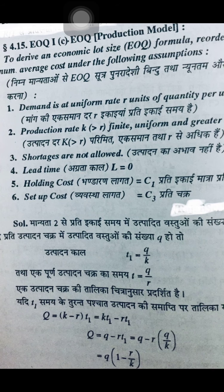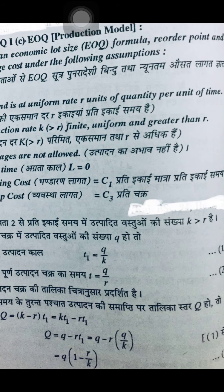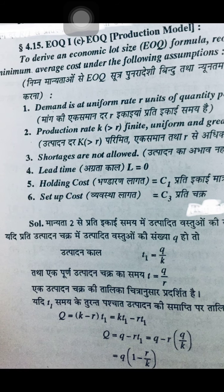Assumption two: the number of units produced per unit time K is greater than R. If the number of units produced in one production cycle is Q, then the production period T1 — which we discussed in the diagram — will be Q divided by K, since Q units are received and K is the total rate. The full production cycle time T equals T1 plus T2, and since all units Q are sold at rate R, T equals Q upon R.